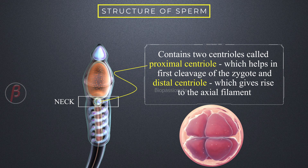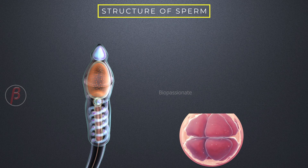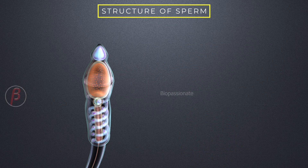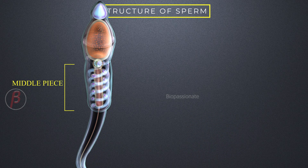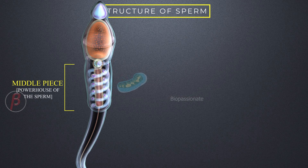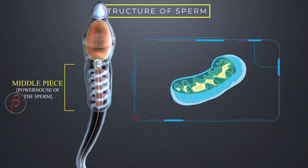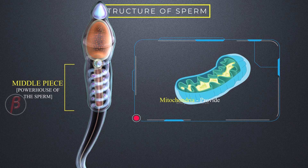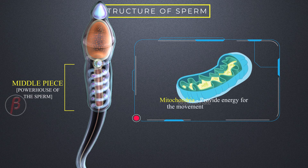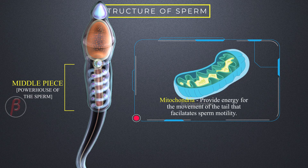Cleavage is a repeated mitotic division of the zygote. The middle piece is also called the powerhouse of the cell. It is cylindrical in shape and possesses many mitochondria, which provide energy for the movement of the tail that facilitates sperm motility.